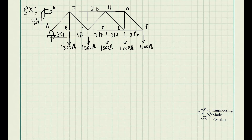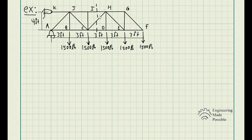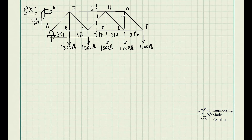To apply the method of sections, we split the truss at the part where two of the members we need to solve intersect the cut line. The imaginary cut line intersects three members, which is ideal since we have three static equilibrium equations. I'll draw the right side of the truss to analyze, because the left side has two hinges each with two unknown forces, which would add complexity and slow down the process.